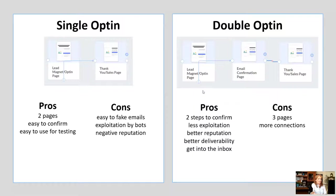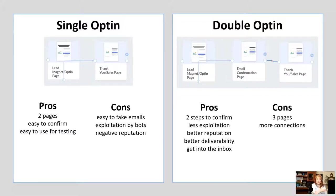We're going to look at single opt-in and we're going to look at the blueprint. A single opt-in blueprint is typically a lead magnet opt-in page. And once they fill out the form, they go straight to the thank you page or the sales page, whichever one you're going to offer them. If it's just a lead magnet and that's all you're getting is their information, you're going to send them to a thank you page. If you've got a sales page, you can go from the opt-in page straight to the sales page. That's a single opt-in.